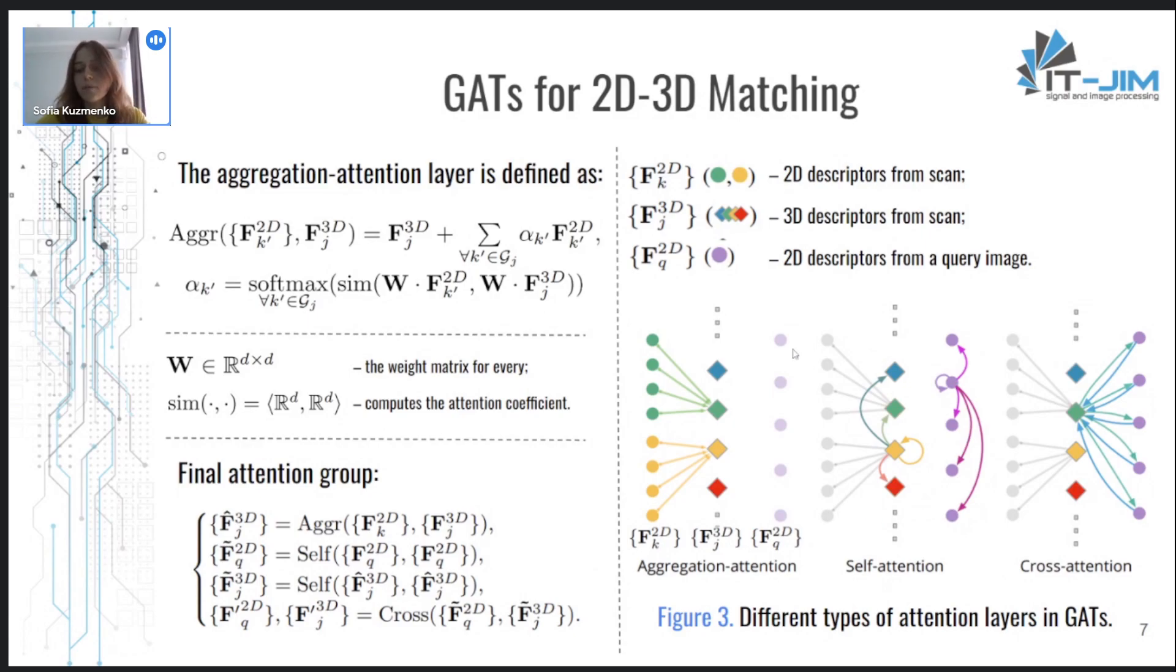Such that, for example, the aggregation attention adaptively choose the most relative two-dimensional descriptors for describing a 3D point. While the self and cross attention layers prompt features to exchange information with each other, thus making the matching globally constant and probably context dependent.